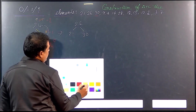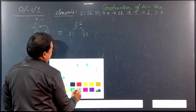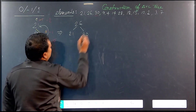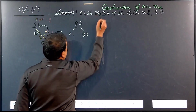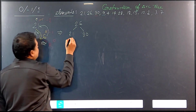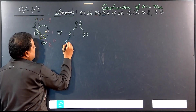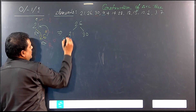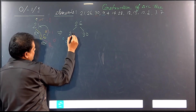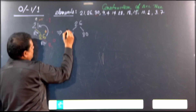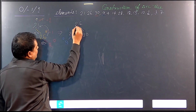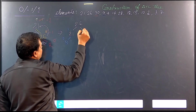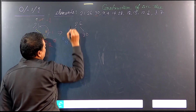Now we are going to insert another node. After 30, the next element is 9. So 9 is inserted. Then the balance factor for 9 is 0, for 21 it is 2 minus 1, which is 1. No problem.